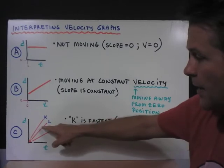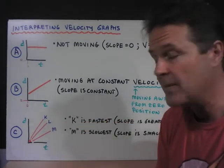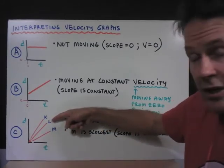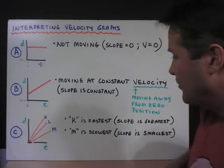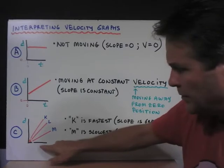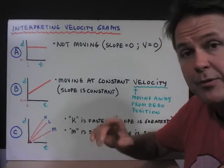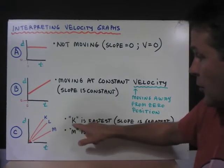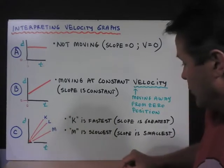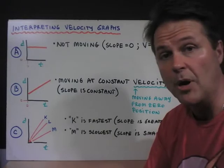In this third example, I have three different lines on the same set of axes: object k, object l, and object m. When we set up three lines, we can compare their speeds. I don't even have to put numbers on the axes, we can just look at the relative slopes. So k is considered to be the fastest because the slope is the greatest, and m is the slowest of the three because the slope is the smallest.